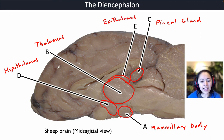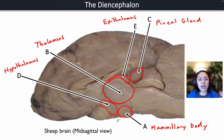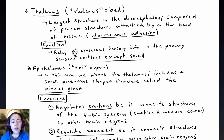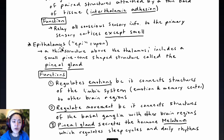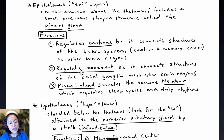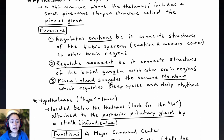Usually when looking at a sheep brain, you won't see the pituitary gland because when you remove the sheep brain, the stalk holding the pituitary gland to the hypothalamus often breaks. To summarize the diencephalon: it is composed of the thalamus, the largest region, whose function is to relay all conscious sensory information to the cortex. Then we have the epithalamus, located above the thalamus, with three major functions: regulating emotions, helping to regulate movement, and secreting melatonin via the pineal gland.